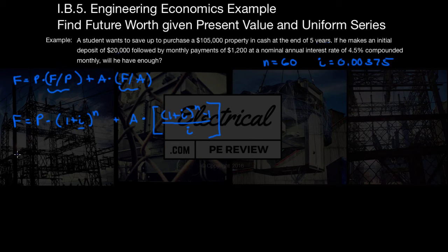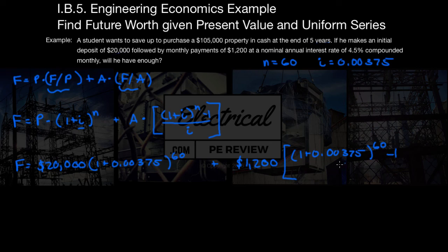Okay, let's plug in our numbers and get on with it. So we have F equals the P of $20,000 times 1 plus I, 0.00375, to the exponent of N equals 60. That's our first term. Our second term is A, we know is $1,200. That's our monthly payment times up top 1 plus I, 0.00375, to the exponent of 60 minus 1, all on top of our same interest of I equals 0.00375.